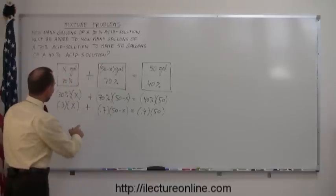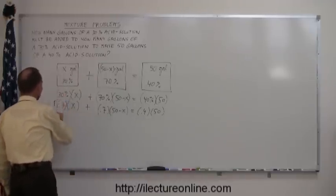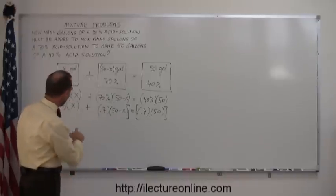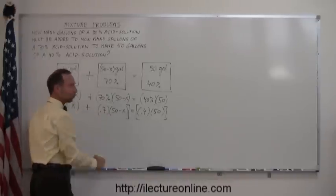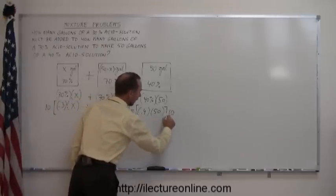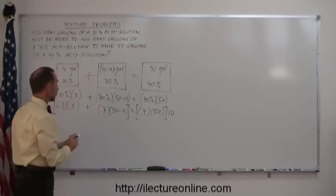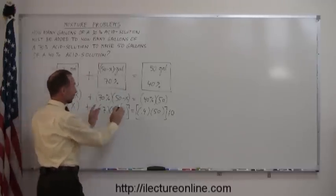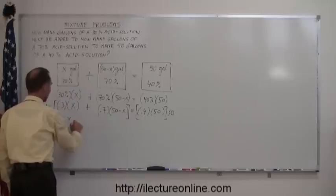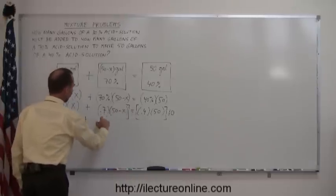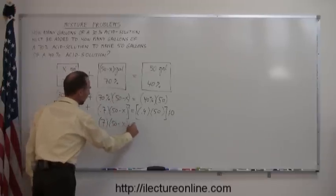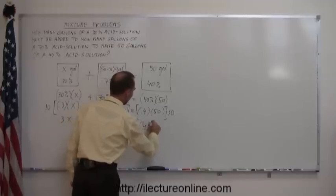Okay, now we have an equation that has decimals in it, and we don't like decimals, so we're going to multiply both sides of the equation by a number to eliminate those decimals. And it looks like all I need to do is multiply both sides by 10, because then the .3, the .7, and the .4 turn into a 3, a 7, and a 4. So, I multiply the left side and the right side by 10. Of course, remember, if you're going to multiply something on the left side, you must multiply the right side by the exact same thing. Okay, let's do that now. So, 10 times .3 is 3. So, I have 3x plus 10 times .7 is 7, multiply that times 50 minus x, and 10 times .4 is 4 times 50.